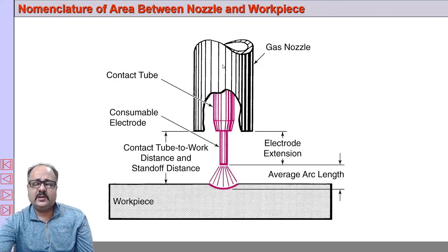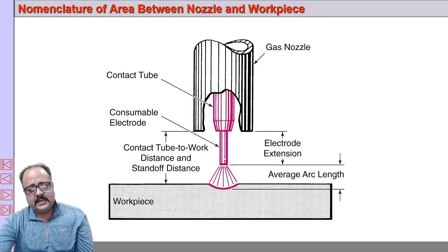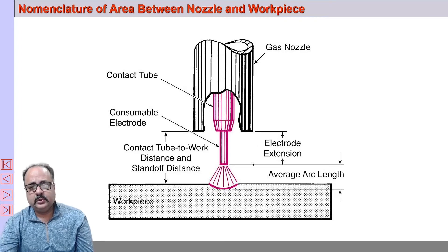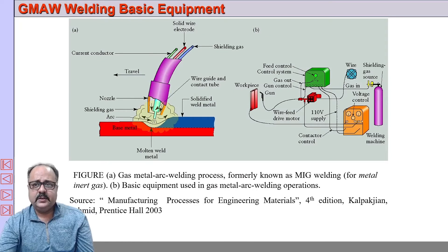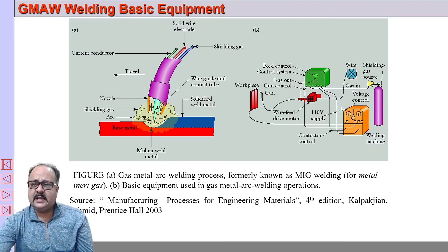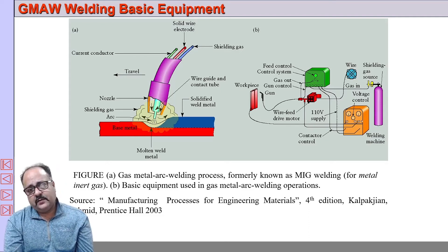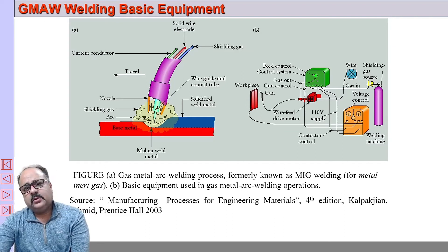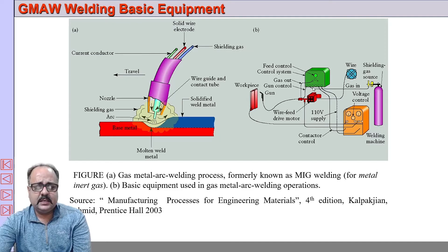Basically, you have a welding gun or nozzle with a contact tube through which the wire comes out, and surrounding the contact tube is a tube through which the shielding gas exits. The arc is produced between the bare electrode and the workpiece, with the wire continuously fed from a spool via a roller and motor arrangement. A gas cylinder supplies the shielding gas, and a constant voltage power source is used, because we want to keep the voltage constant.